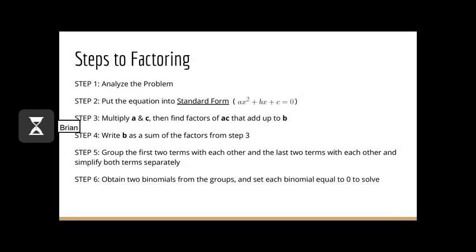The steps of factoring are as follows. Step 1 is to analyze the problem. Step 2 is to put the equation into standard form. Step 3 is to multiply a and c, and then find factors of the product of a and c that add up to b. Step 4 is to write b as a sum of the factors from step 3. Step 5 is to group the first two terms with each other and the last two terms with each other in order to simplify both terms separately. Step 6 is to obtain two binomials from the groups and set each binomial equal to zero in order to solve. This might seem like a lot of steps, but we will go over all steps in detail, so don't worry.